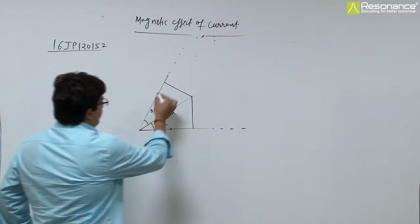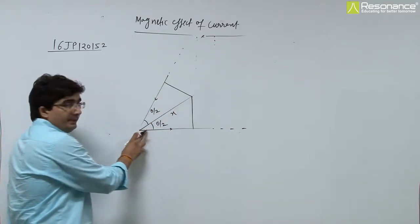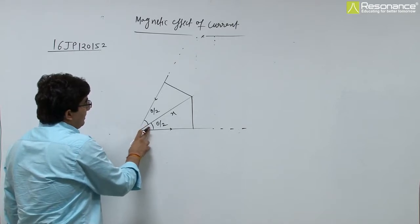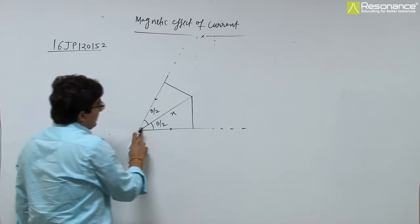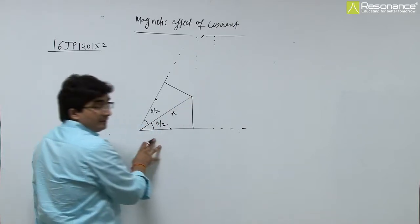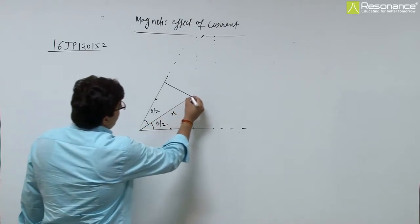A wire is bent at an angle theta, symmetrically theta by 2 to theta by 2. It is the angle bisector of these two wires. Find the magnetic field at this point.